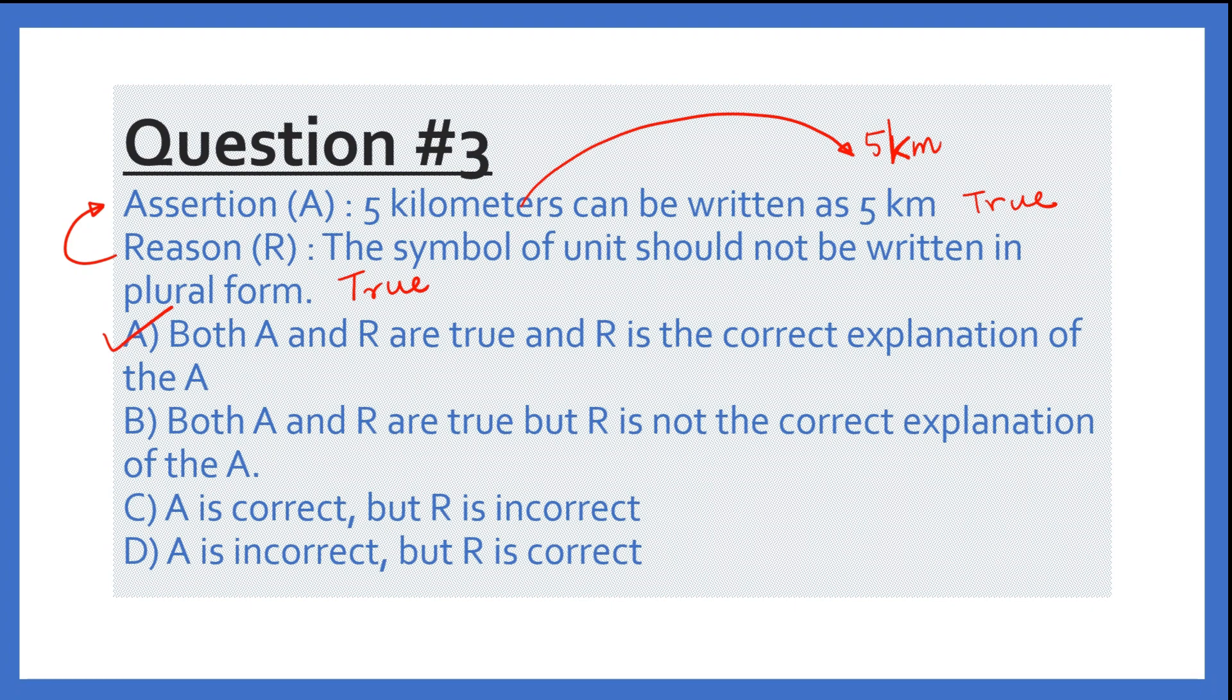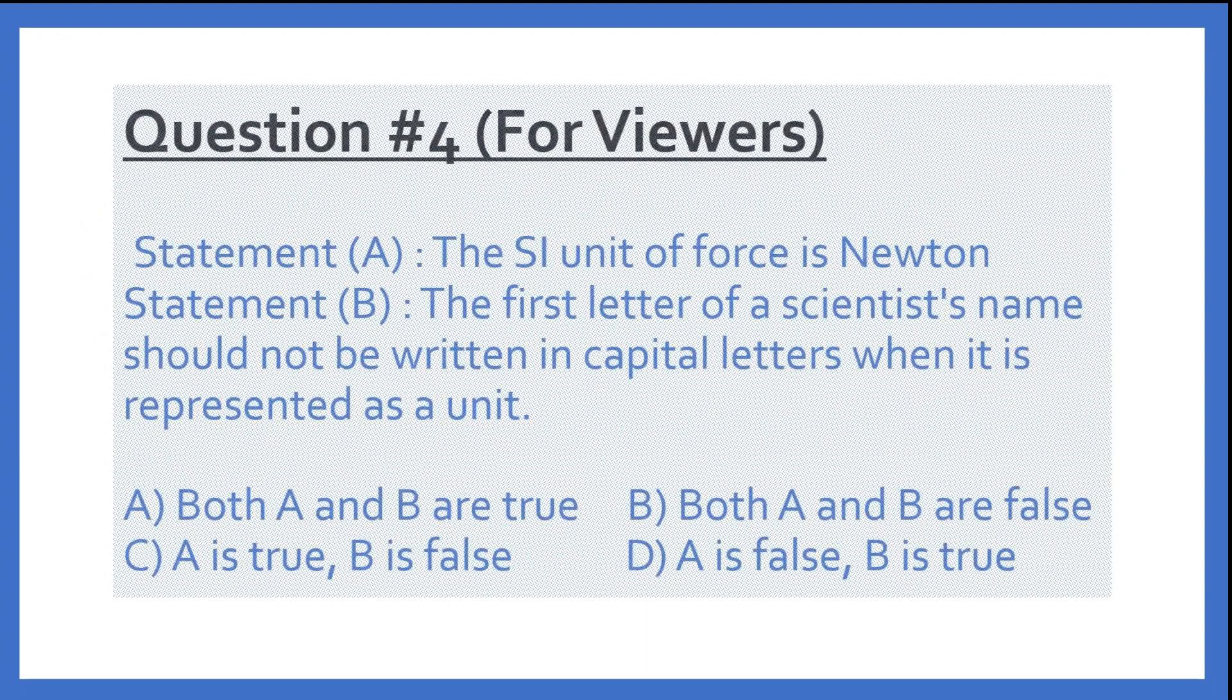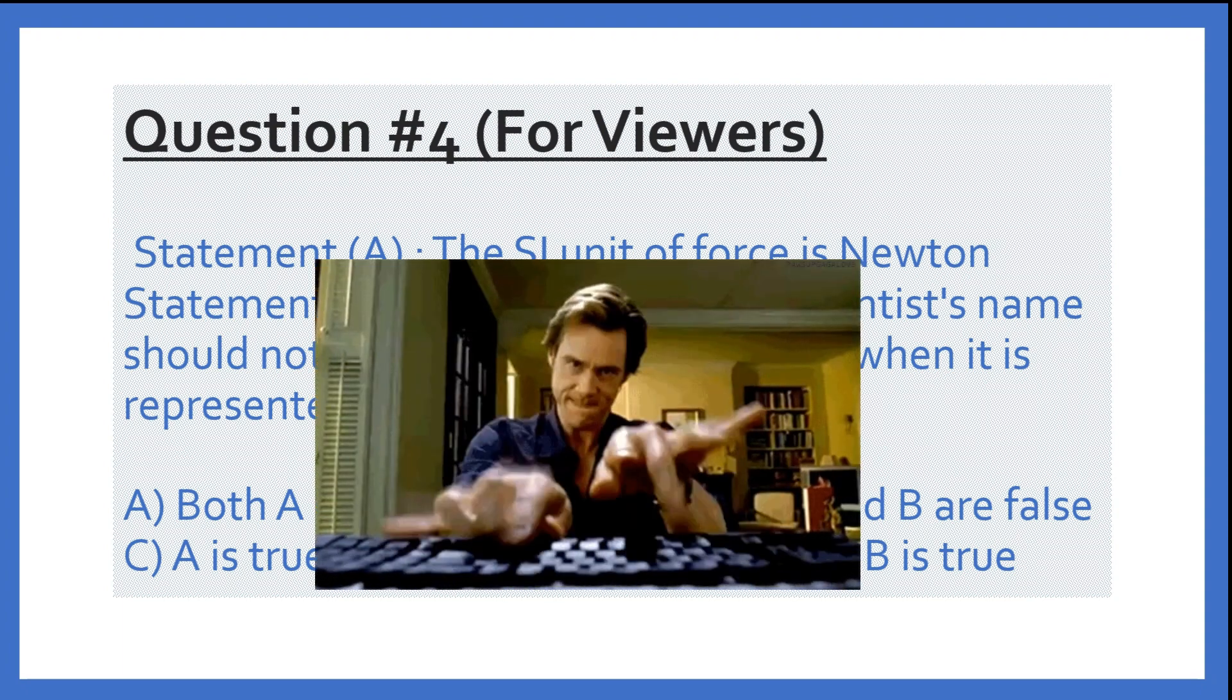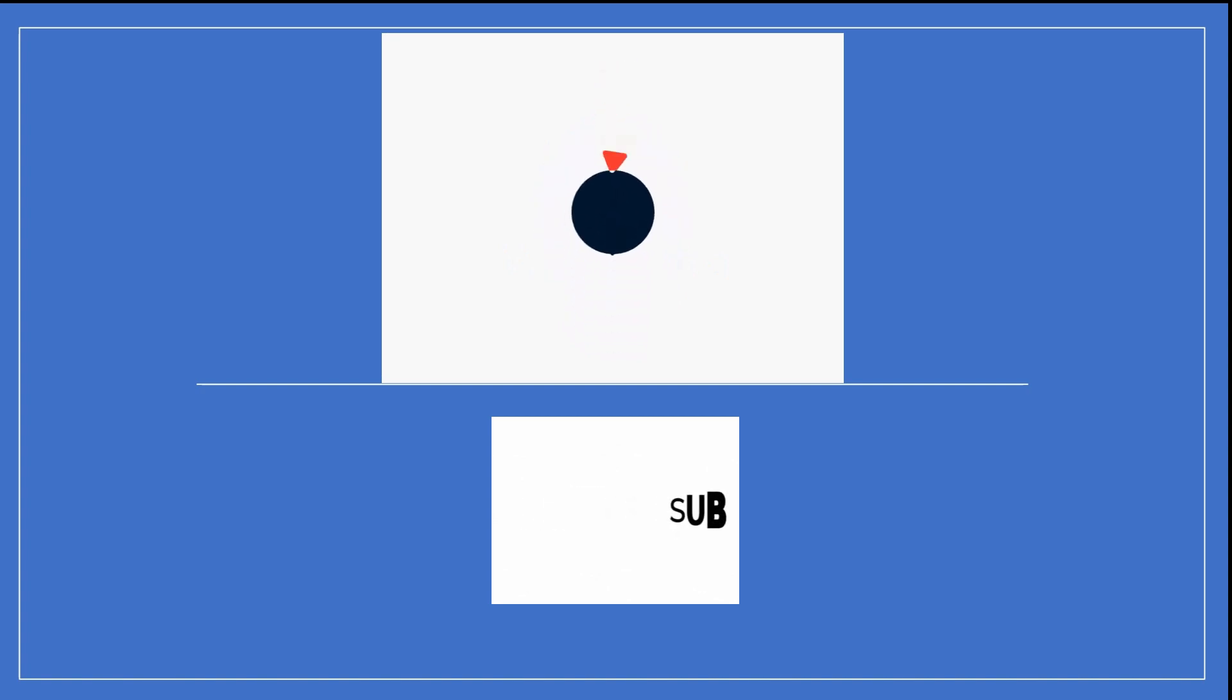And the next question is for the viewers. The question is statement A: the SI unit of force is Newton. Statement B: the first letter of scientist name should not be written in capital letters when it is represented as a unit. Now four options are there. Both A and B are true. Option B, both A and B are false. Option C, A is true, B is false. Option D, A is false, B is true. So think about it. Write your answer in the comment section. And I hope you have enjoyed watching this video. You have learned something. And if you have done so, please like the video and share it with your friends and family members. And do subscribe to the channel. Bye bye.